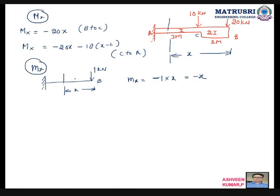Now what is our formula? YB is equal to 1 by EI, integration Mx small mx, capital Mx dx. Now listen please carefully. Here what is EI? Here what is I? Here 2.